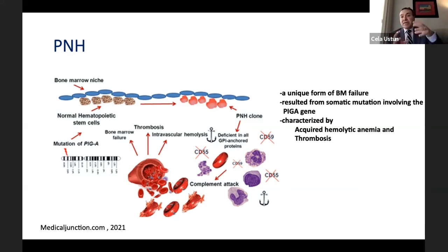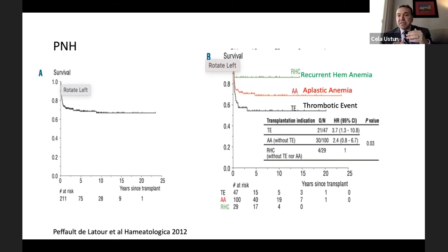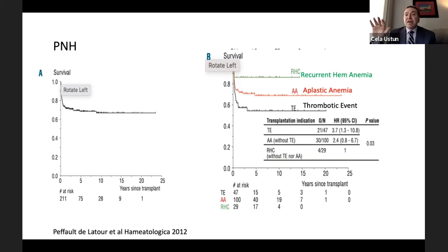PNH can progress to aplastic anemia or MDS. Nowadays the standard therapy for PNH is to block the early destruction of red cells — there are really good medications, like eculizumab, that have changed the survival of these patients. However, a small group may require transplantation. A French retrospective study of 160 PNH patients showed survival of around 70% after transplantation. Patients with recurrent hemolysis did better at 85–90%. Patients who appeared like aplastic anemia but had a PNH clone did okay at 70%. Patients with recurrent clots did not do as well at 50–60%.